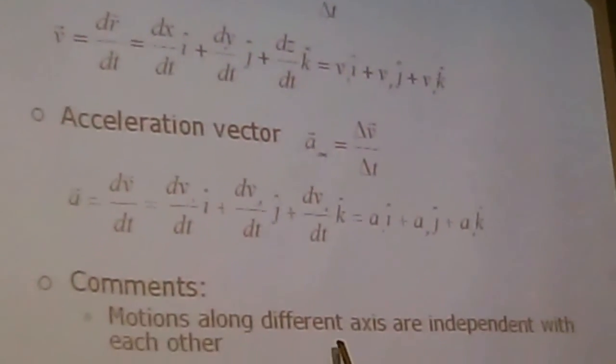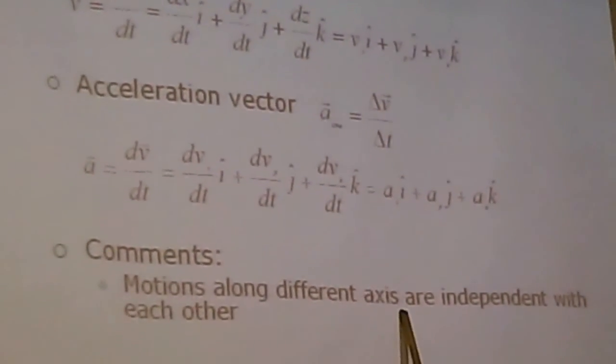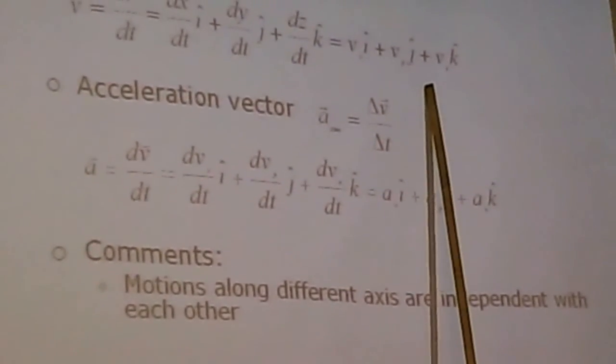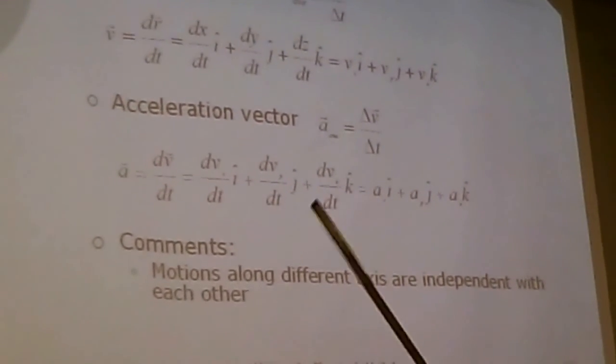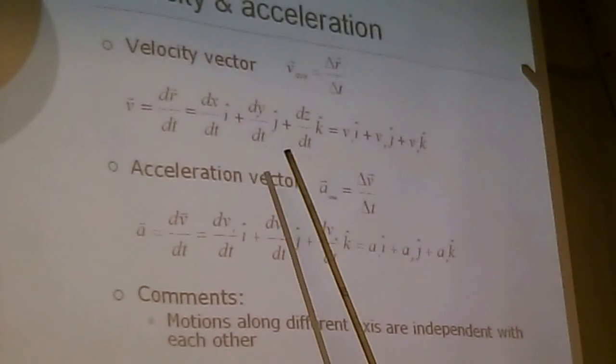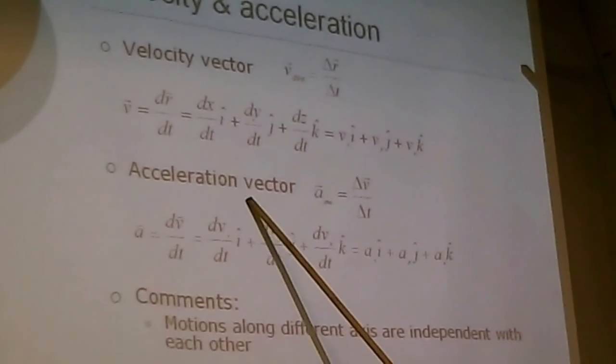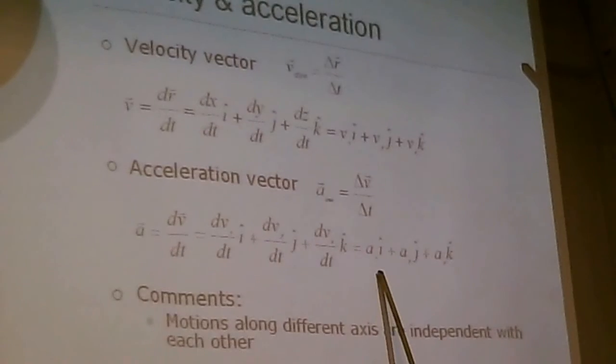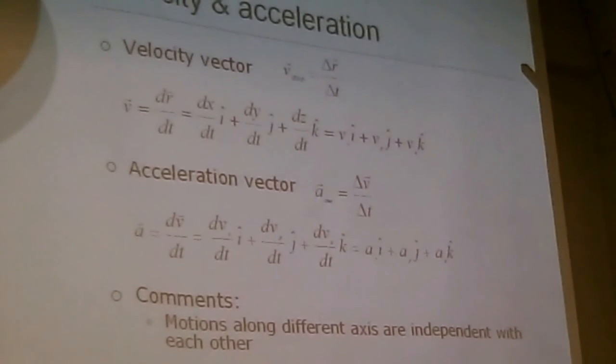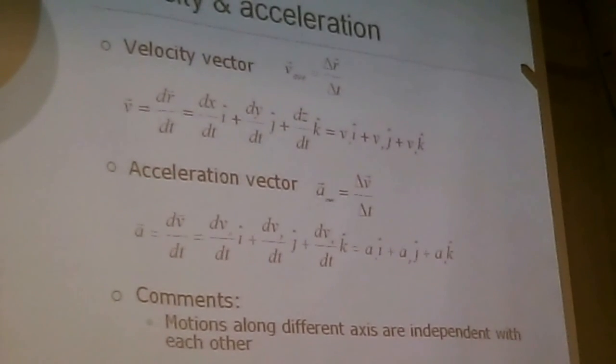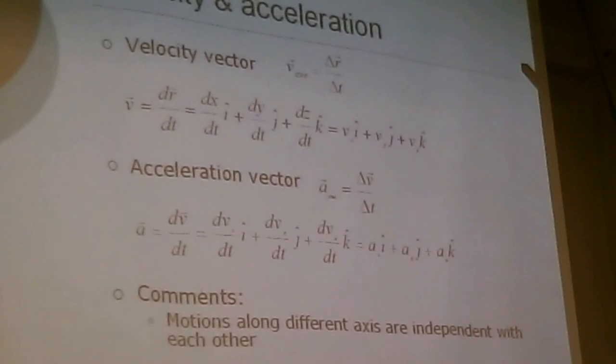So this kind of proves that the motion along different axes are independent with each other. We take derivatives along different directions. So we treat this as a fact before we study the calculus-based physics. But in fact, it's just a natural result of the rule of derivatives. Similarly, if you further take the derivative of A, you can see that you get A equals to Ax i-cap plus Ay j-cap plus Az k-cap. So that's how we can express all these vectors, motion vectors, from the standard manipulation of calculus. I'm going to stop here.